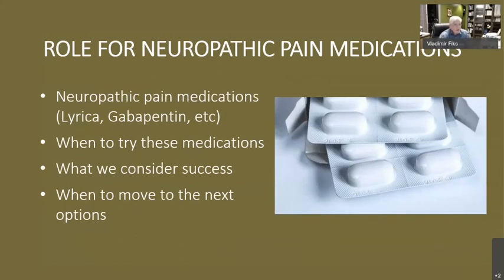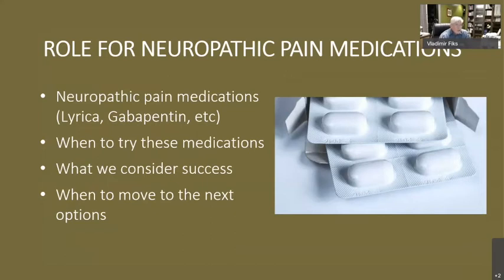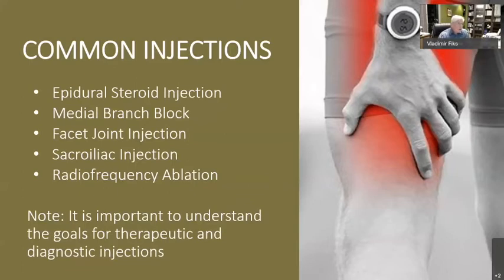Opioids are not the only medications we utilize for treatment of pain conditions. We also utilize so-called adjuvant medications. The most important ones are medications used for neuropathic pain conditions. These medications can be quite effective for neuropathic pain such as peripheral neuropathy or sciatica. Medications like Gabapentin and Lyrica, as long as they're well tolerated, can show significant improvement. We consider success in treatment with neuropathic pain medications to be when patients are able to decrease their symptomatology by at least 50% with no significant side effects. However, if medications are not a significant help, we frequently move to other treatment options.